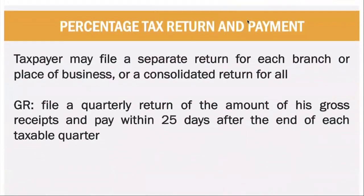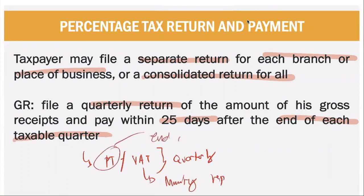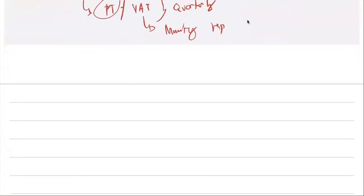For percentage tax return and payment, you file a return for each branch or place of business, or you may file a consolidated return. The general rule is to file a quarterly return 25 days after the end of each quarter. Unlike VAT which has monthly reporting, percentage tax is filed quarterly. Remember: know the business activity, the tax base, and the tax rate — that's all for percentage taxes.